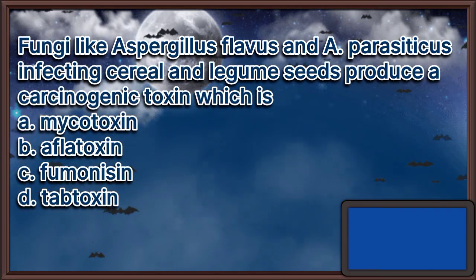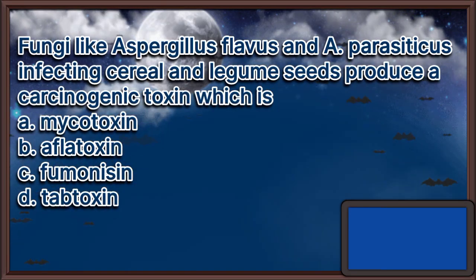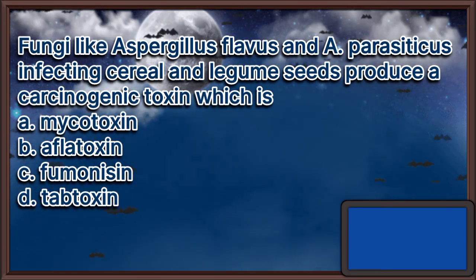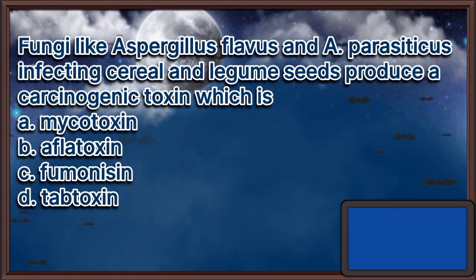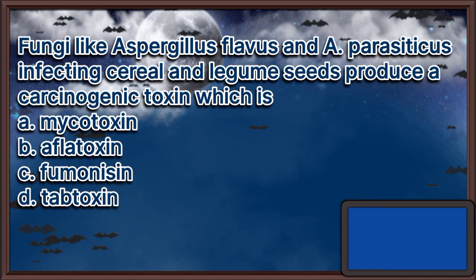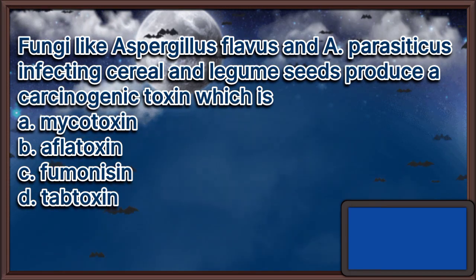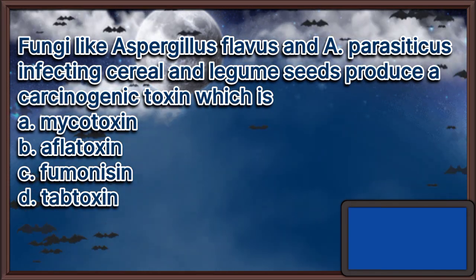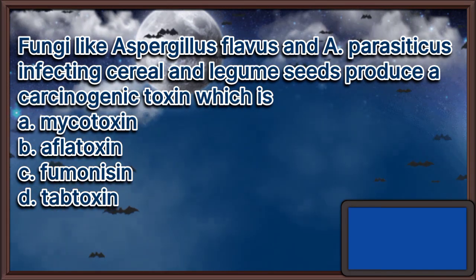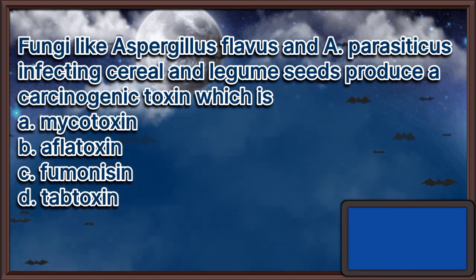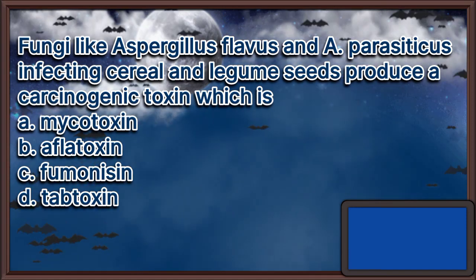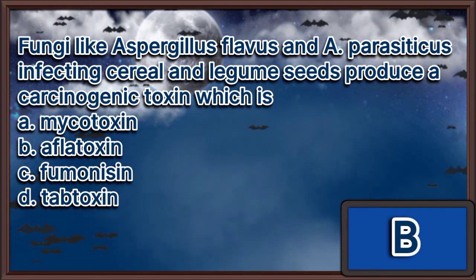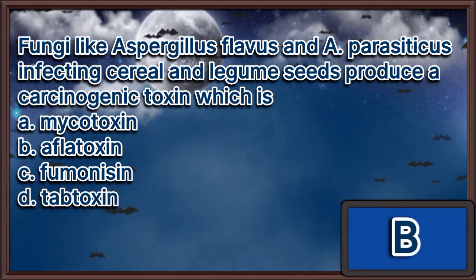Fungi like Aspergillus flavus and A. parasiticus infecting cereal and legume seeds produce a carcinogenic toxin which is. A. Mycotoxin. B. Aflatoxin. C. Humanosin. D. Tabtoxin. The answer is letter B.